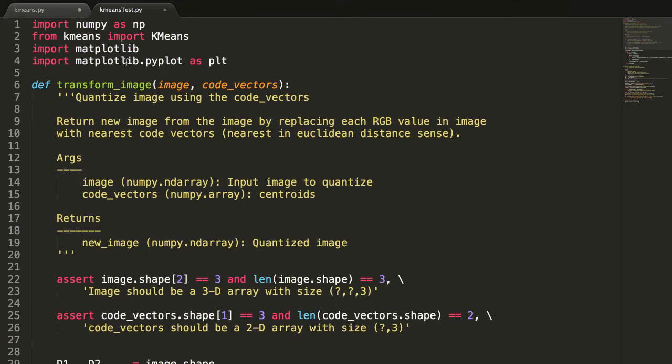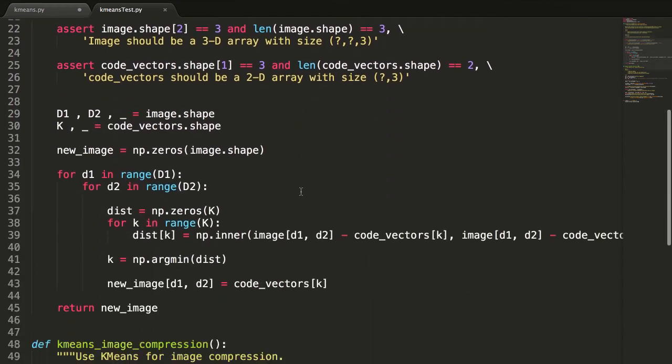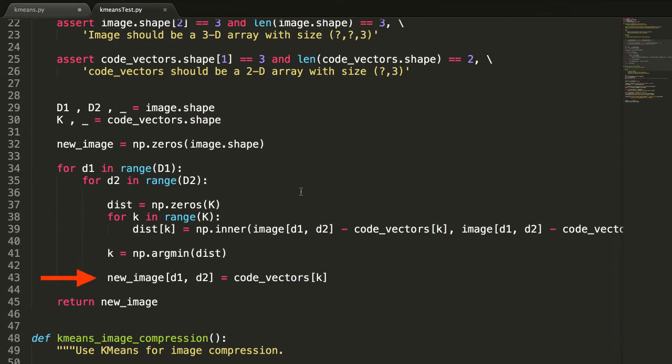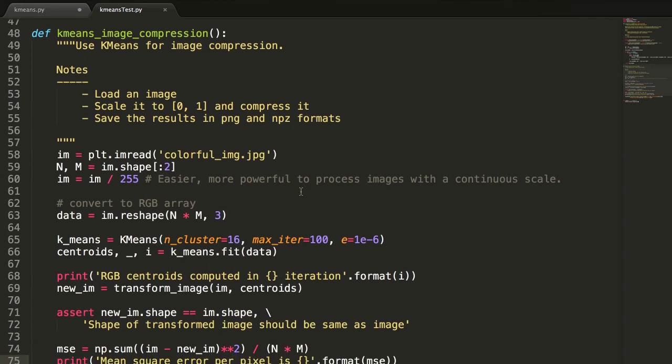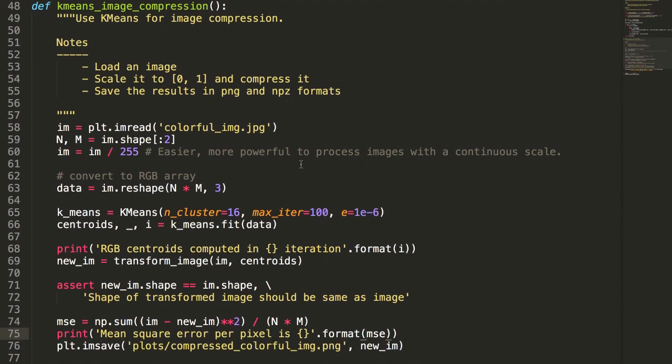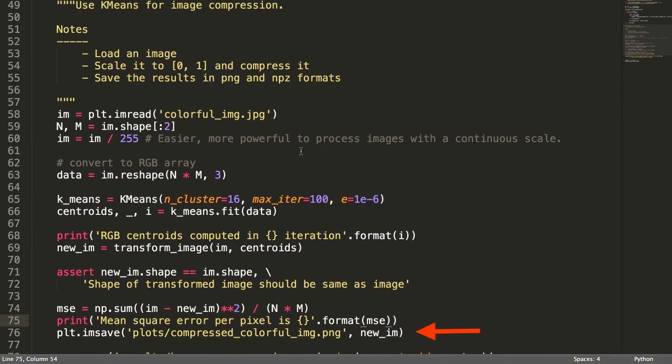Now, we can build the image compressor around it. We define a function transformImage that takes the original image as input and outputs a compressed image of code vectors, the k colors we need to determine. Iterate over every pixel and replace it with its closest code vector. In the k-means image compression method, we read the image, call k-means to learn the best code vectors, compress the image using these code vectors, and save the new compressed image. And we're done.